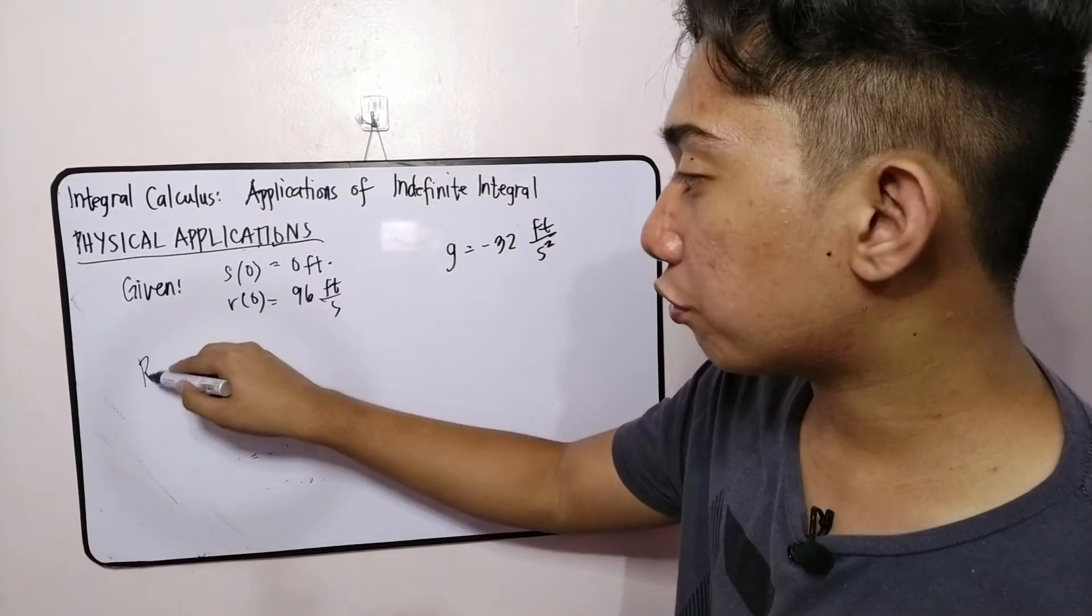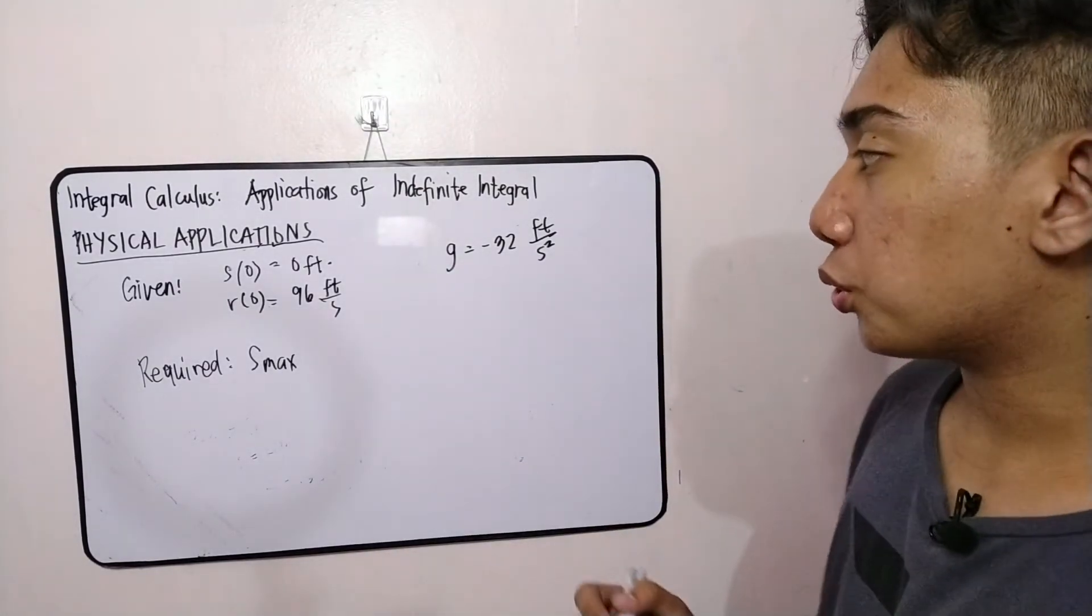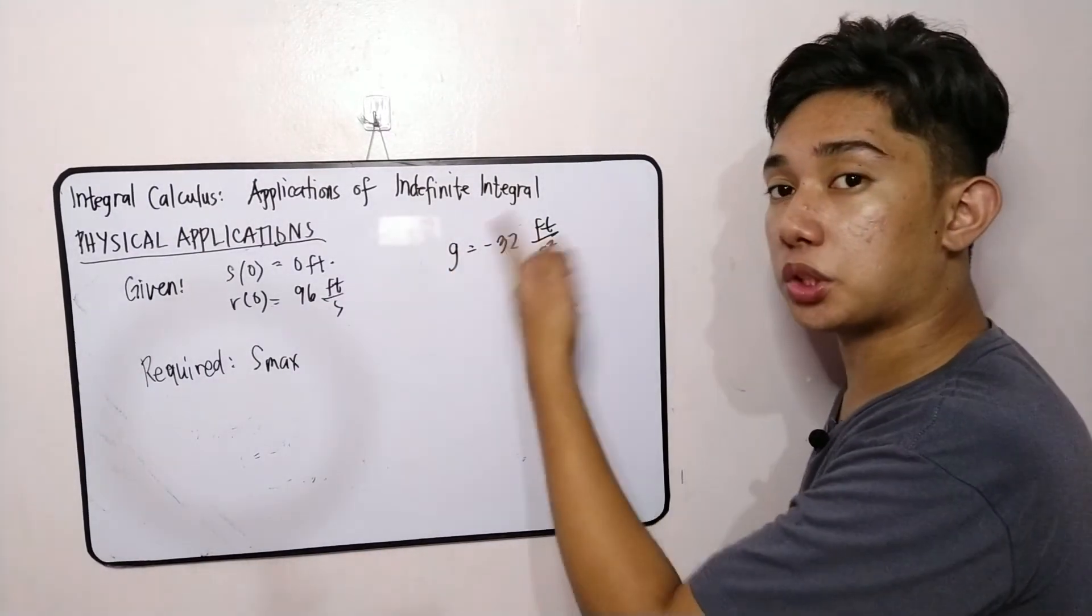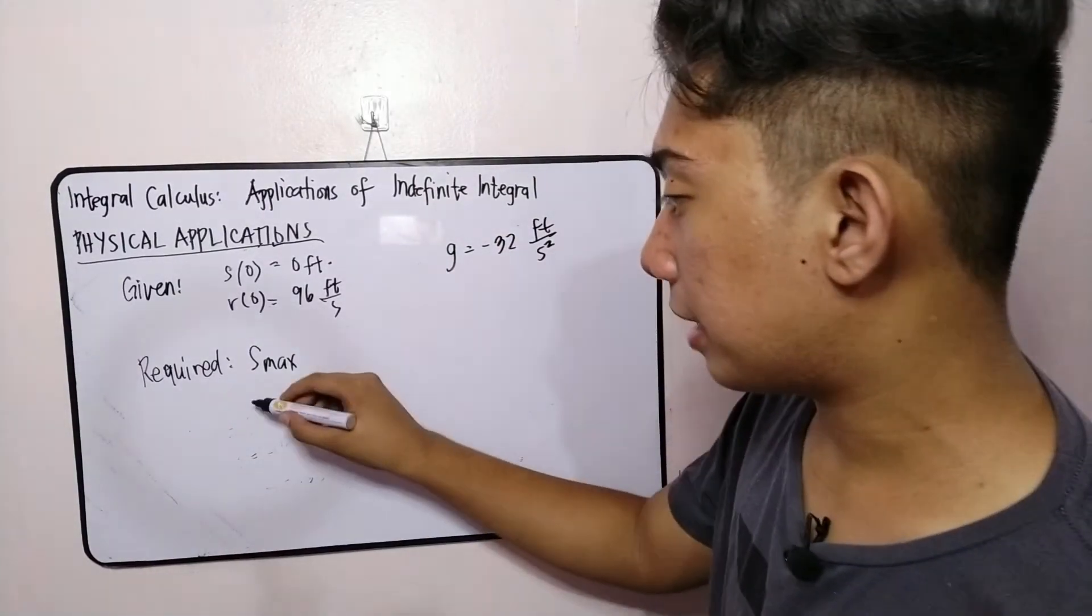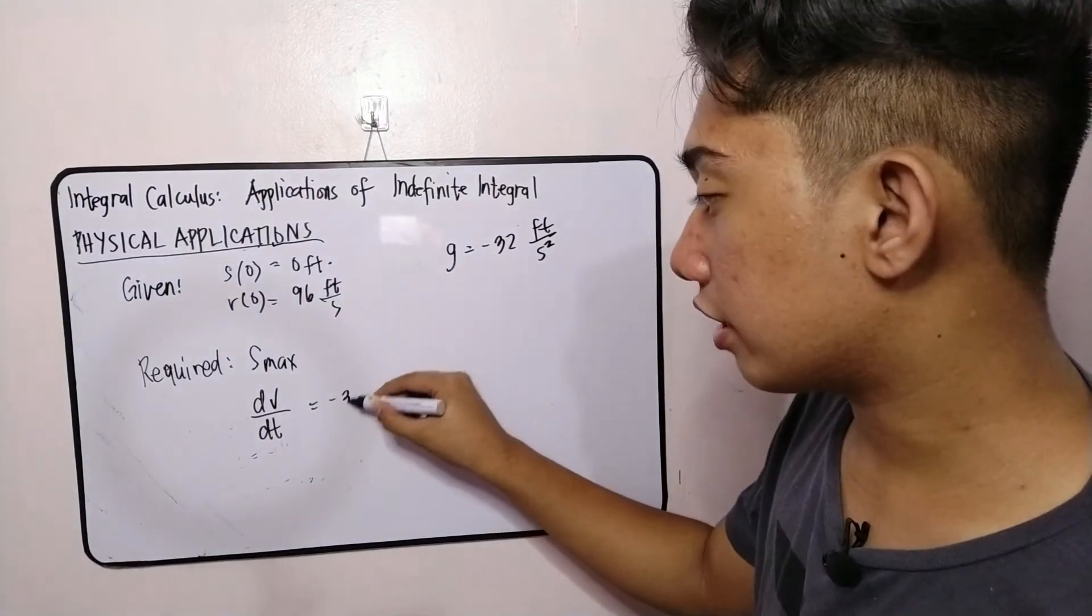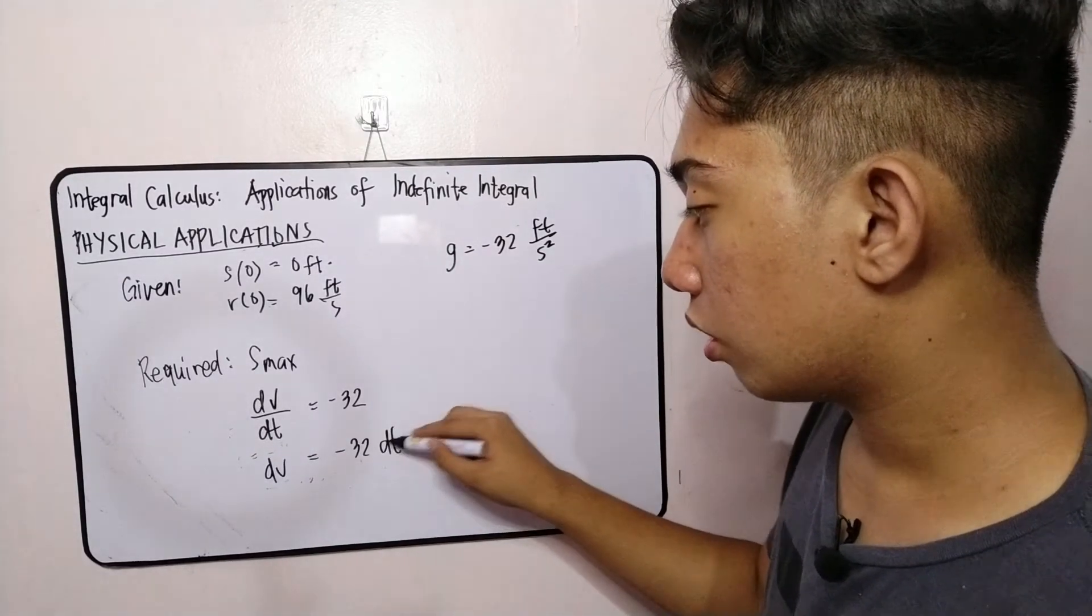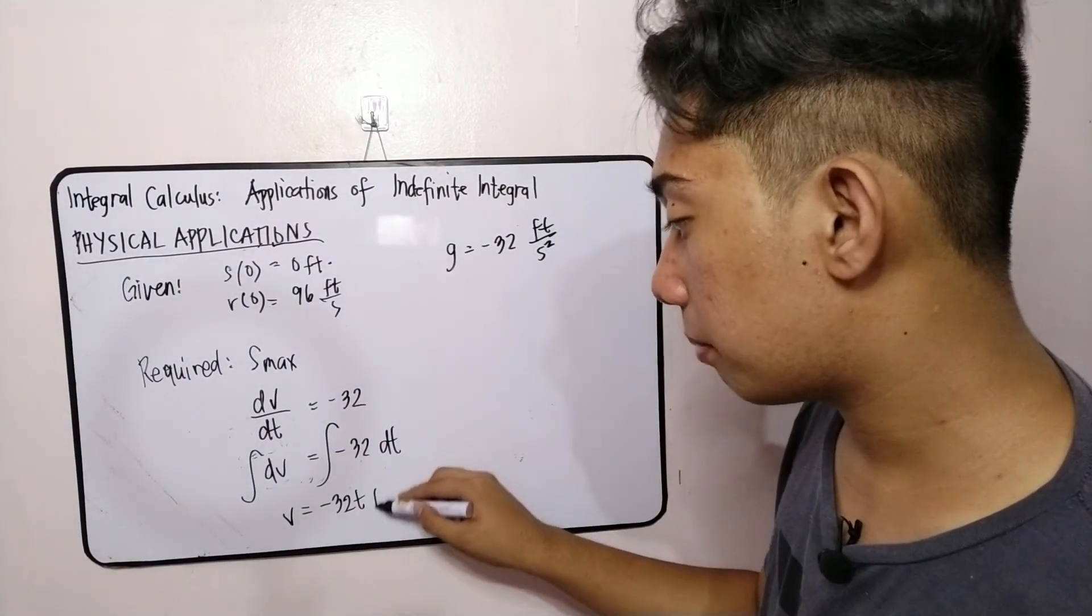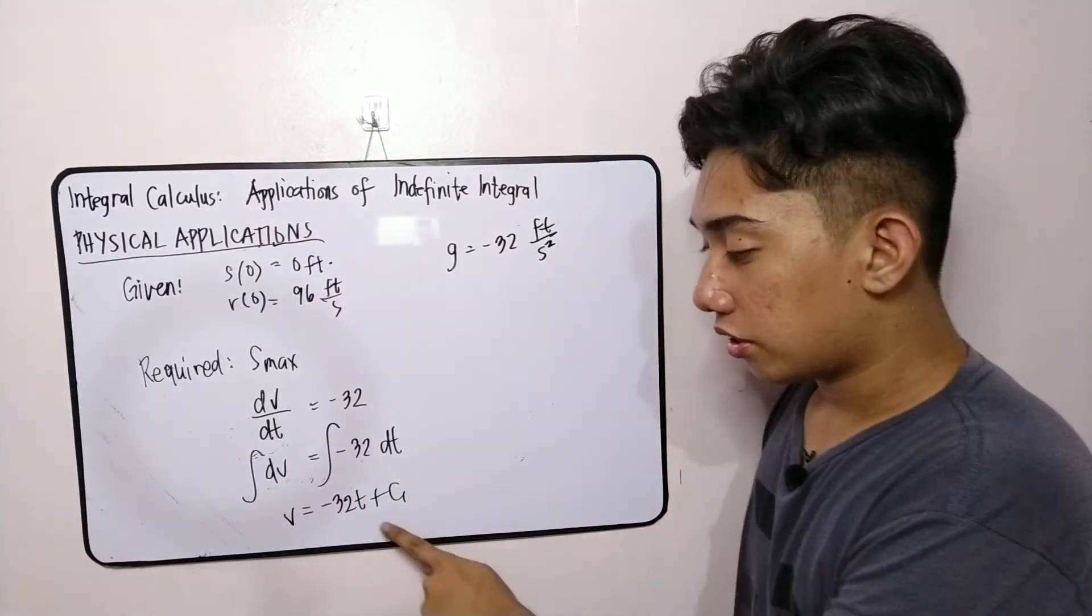So we are required to find maximum height attained by the body when it is thrown vertically upward. So how we are going to do with this one? You take note of this constant. This is the constant that we are using. Therefore, this is the acceleration function. And when you recall, this case will be dv over dt is equal to negative 32. Then we separate variables. dv is equal to negative 32 dt. We take integration, and we get v is equal to negative 32t plus c sub 1. Bakit c sub 1? It's because marami pa tayong kukuni na constants.